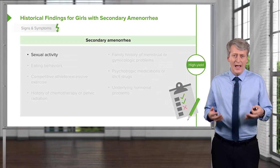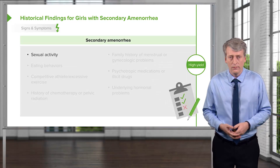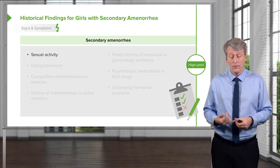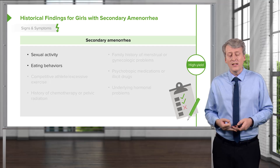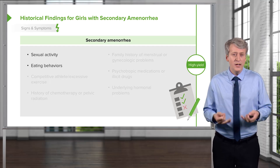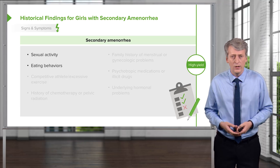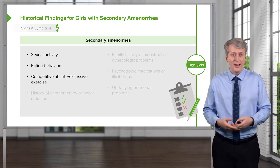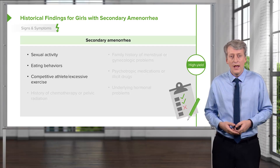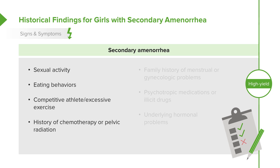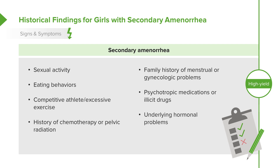In a patient with secondary amenorrhea, it's important to ask about sexual activity — this patient may be pregnant. Ask about eating behaviors, as new onset of an eating disorder could result in secondary amenorrhea. Ask about competitive athletics and excessive exercise, history of chemotherapy or pelvic irradiation, family history of menstrual or gynecologic problems, psychotropic medications or illegal drugs, and underlying hormonal problems.